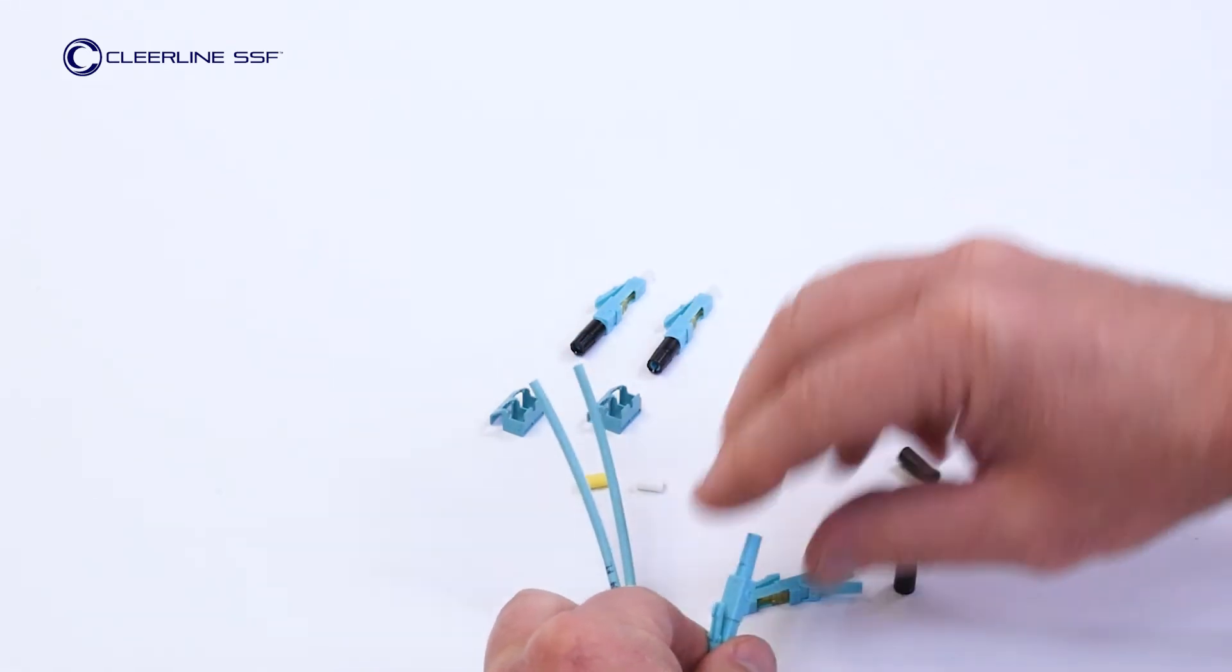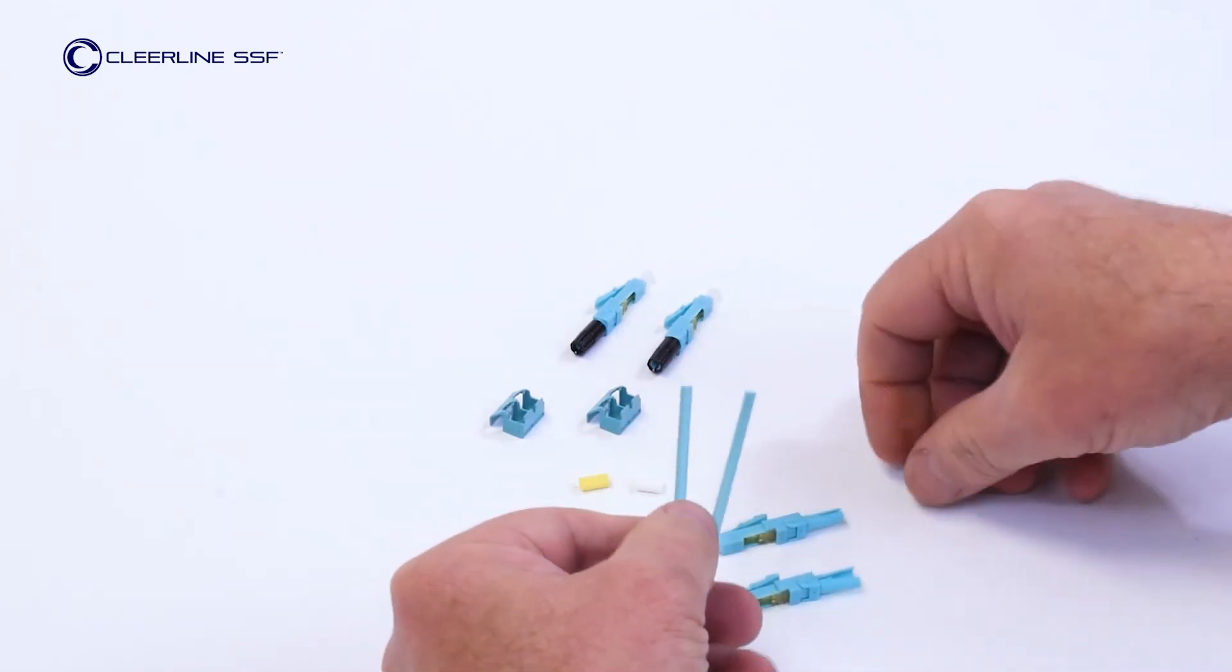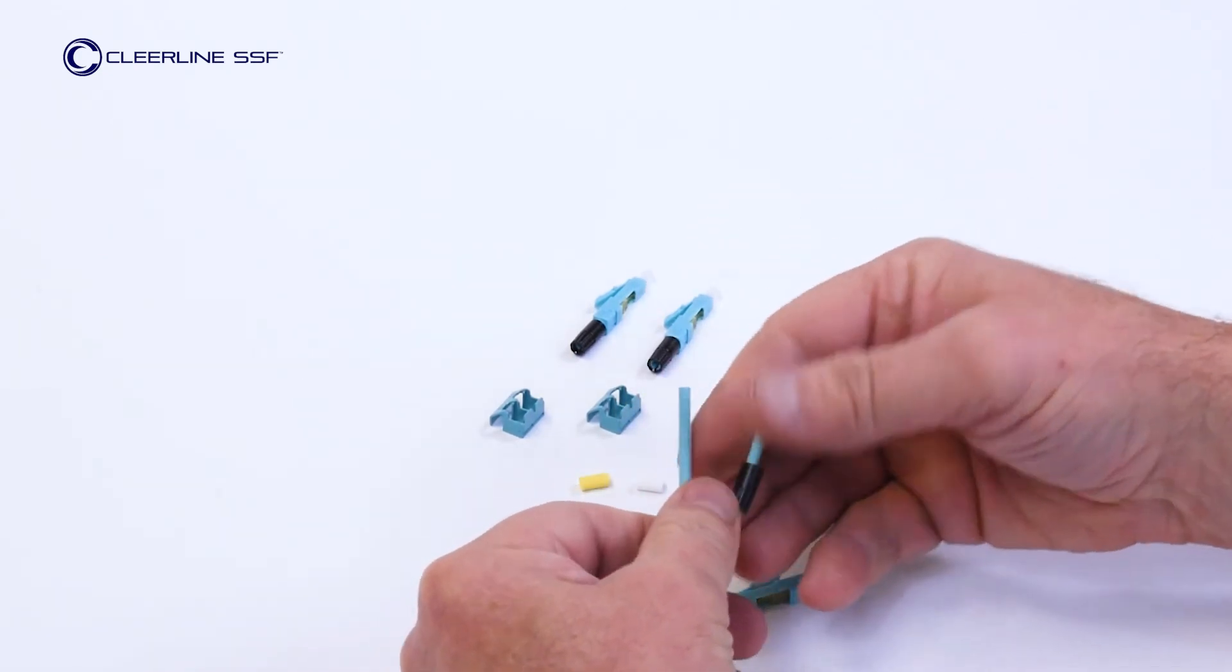Install the connector boots on each strand and terminate as normal. Repeat all steps on the opposite cable leg ends.